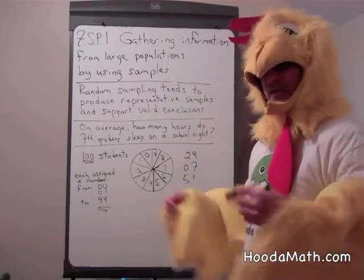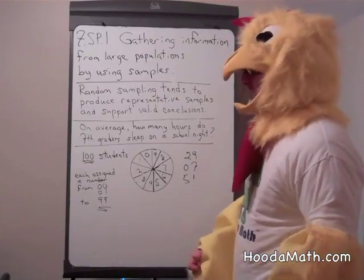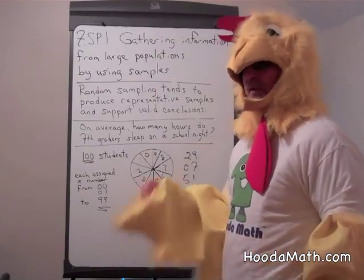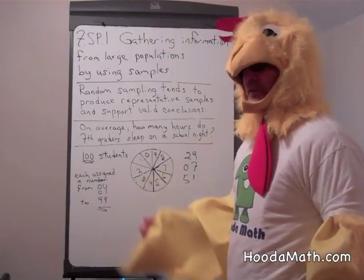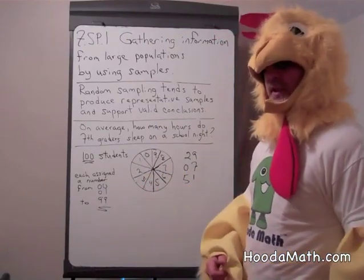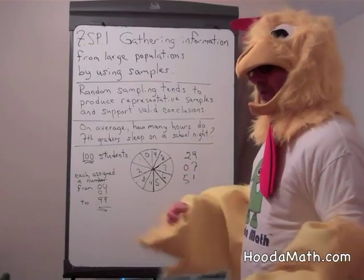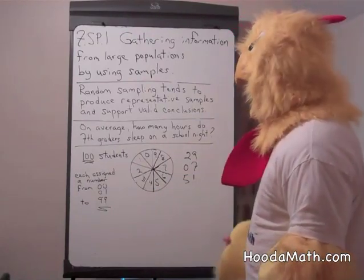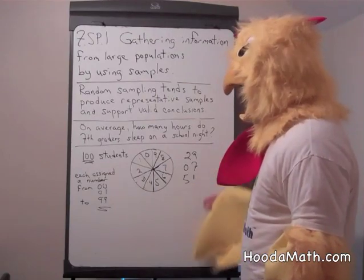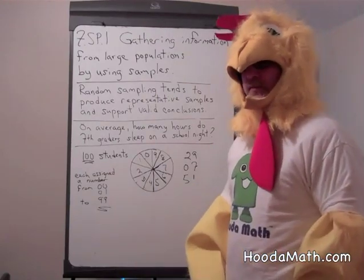Then we ask them to keep track of how many hours they slept on Sunday night, Monday night, Tuesday, Wednesday, and Thursday night. And then take an average of those hours — add them up and take an average. Then we would compare each student's average and make maybe a box and whiskers graph.